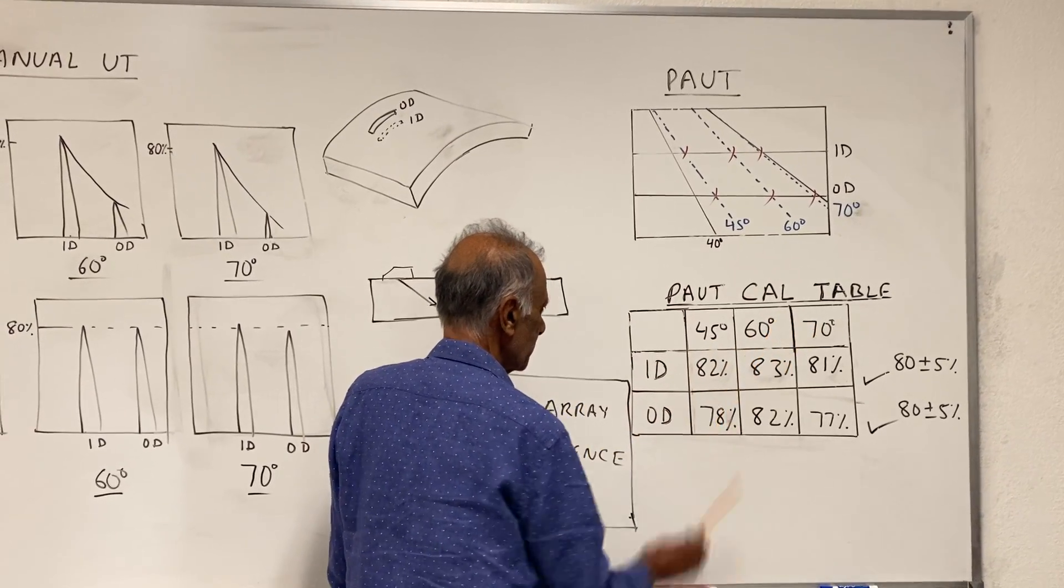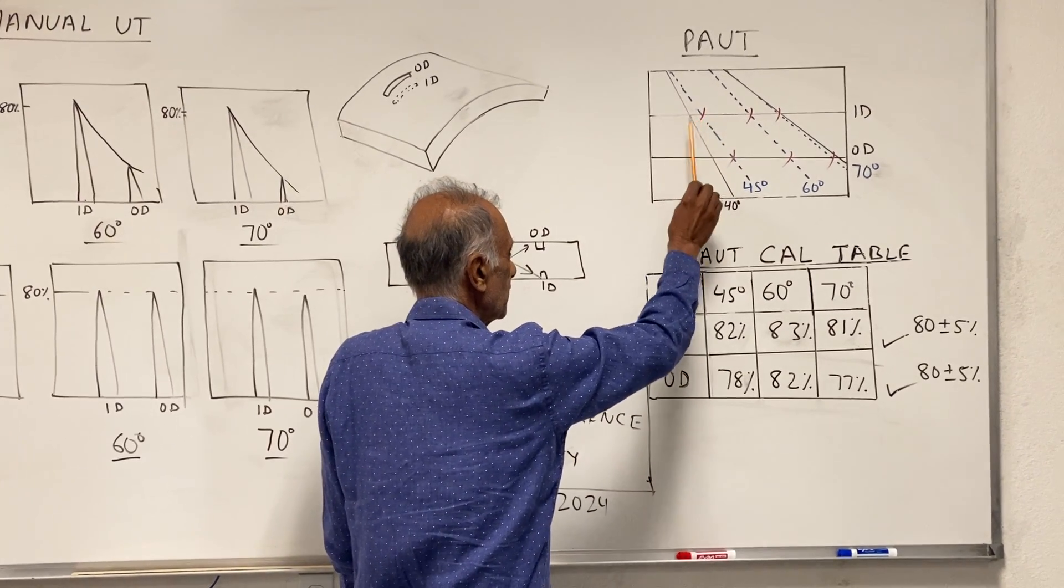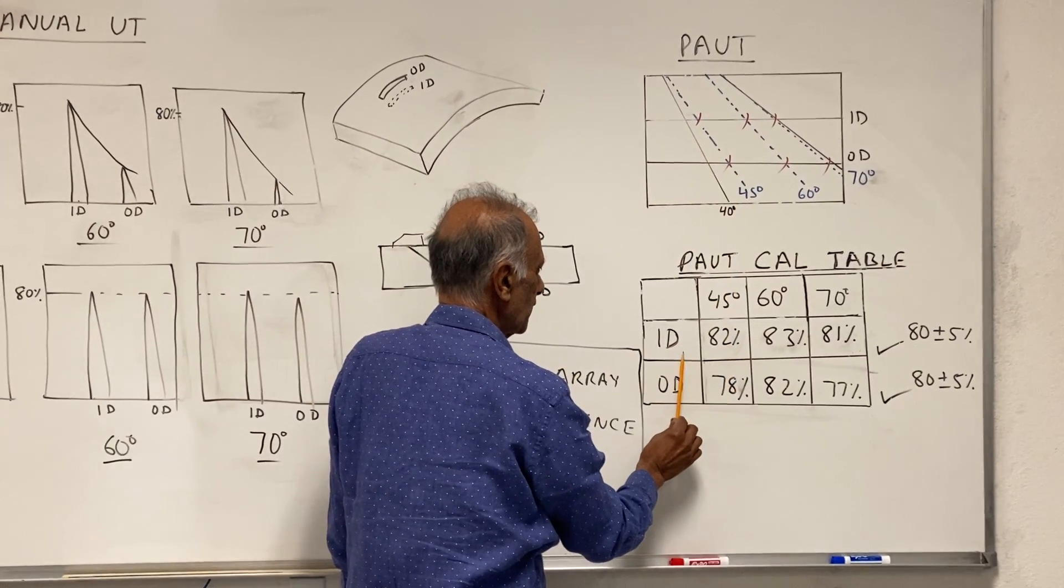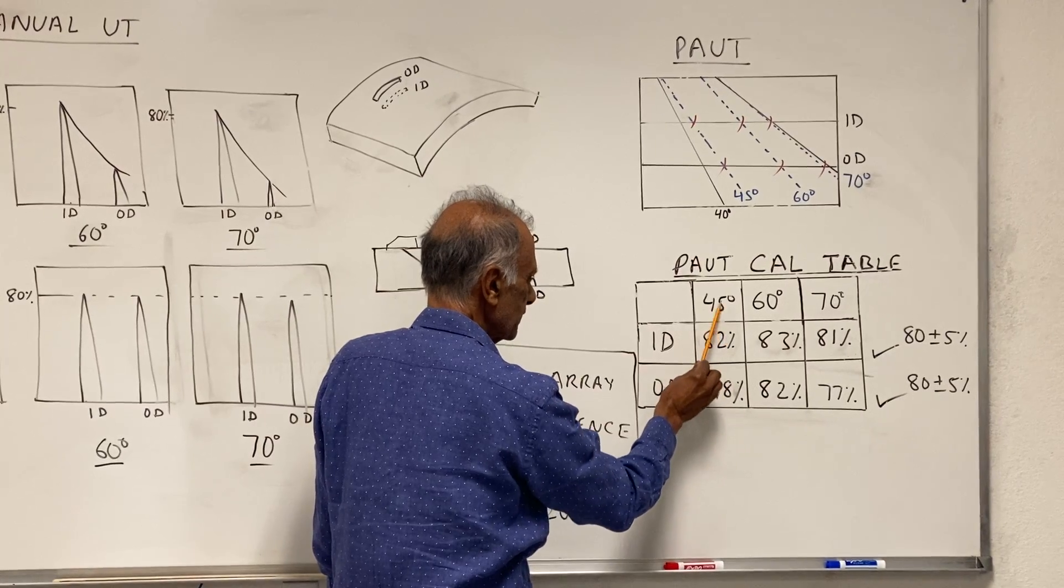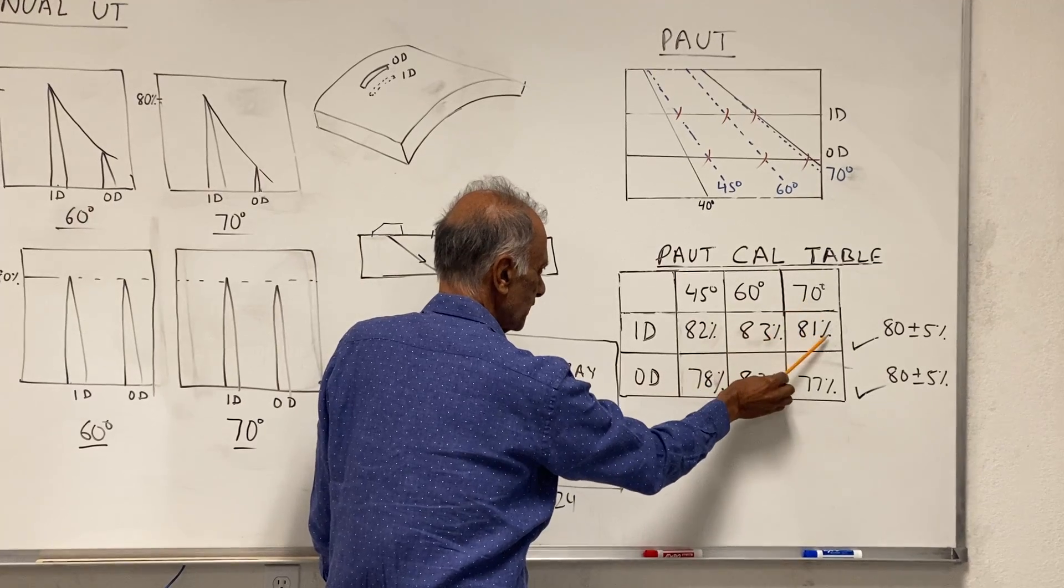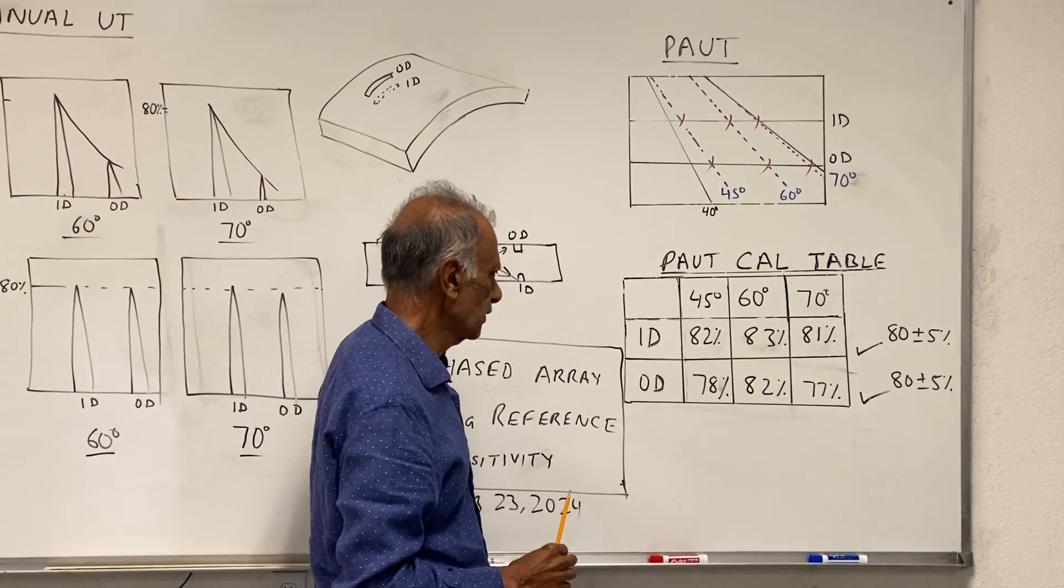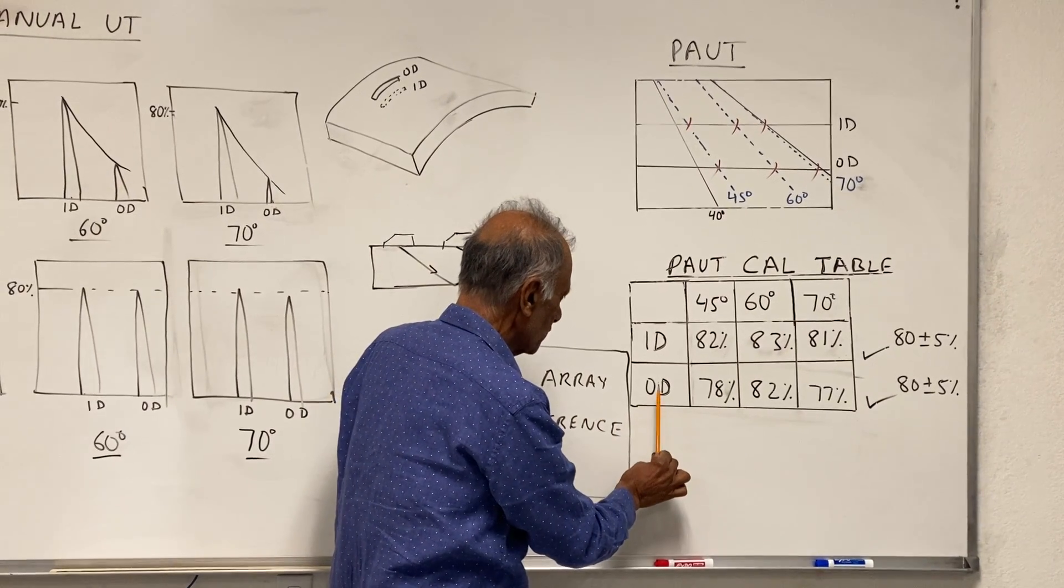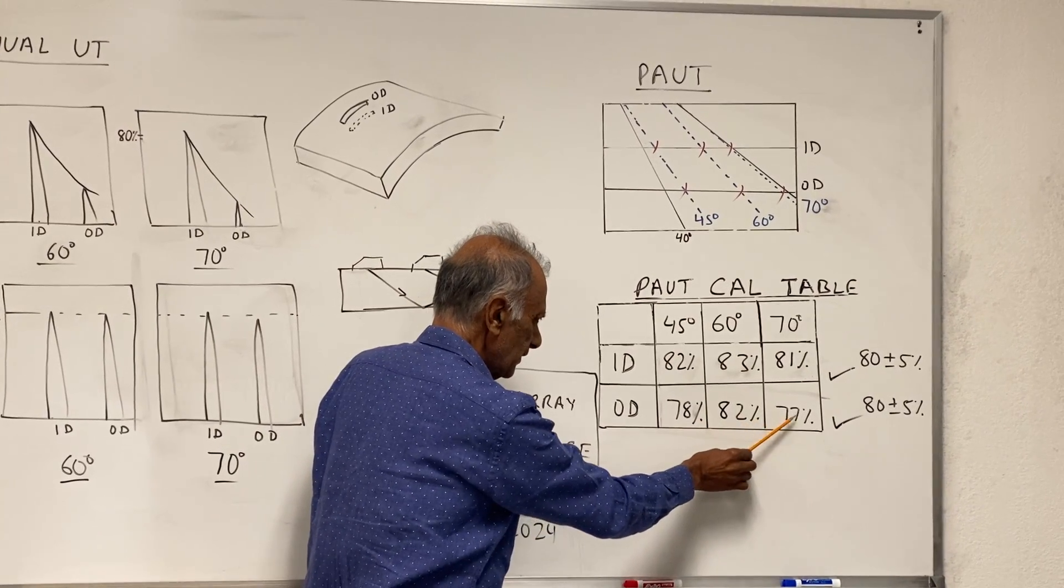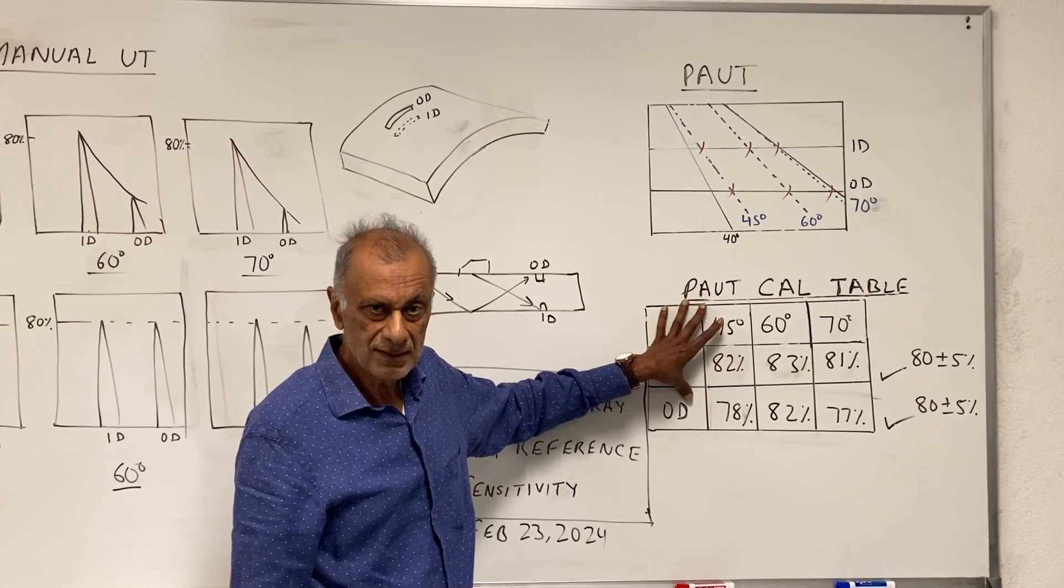Here is the ID PAUT cal table. This is the ID notch, OD notch—these are the 3 angles: 45, 60, and 70. We get the display, move the probe to the ID notch, and take the measurements at 45, 60, and 70, and fill it up here for the ID notch. For example, at 45 we are getting 82%, 83%, and at 70 degrees we are getting 81%. This is acceptable; it's within the code required range. Then we take the same measurements for the OD notch: 78%, 82%, and 77%. This meets the code, and this calibration is acceptable.